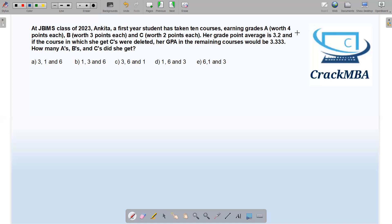So let's begin the question. At JBMS class of 2023, Ankita, a first year student, has taken 10 courses, earning grades A worth 4 points, B worth 3 points, C worth 2 points each. Her grade point average is 3.2, and if the course in which she gets C were deleted, her GPA in the remaining courses would be 3.33. How many A's, B's, and C's did she get?